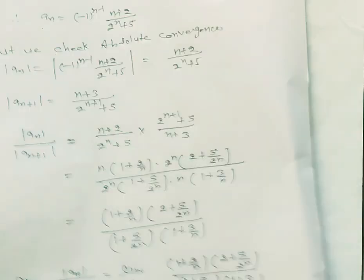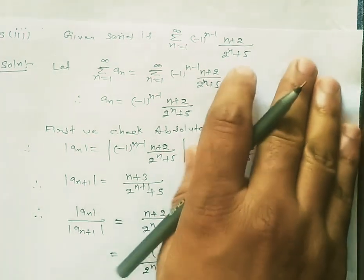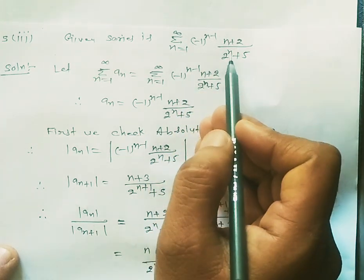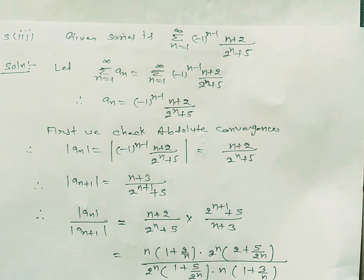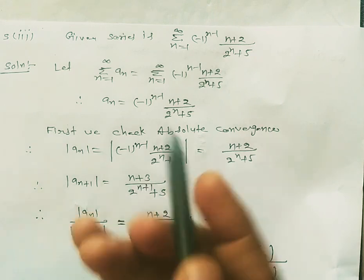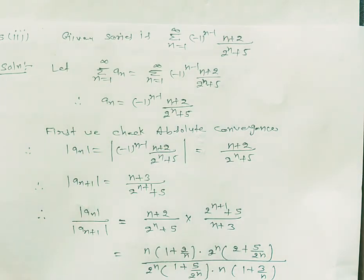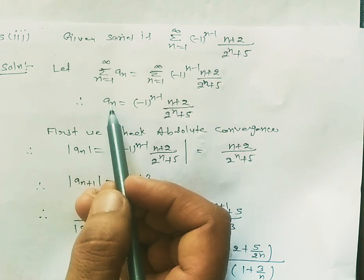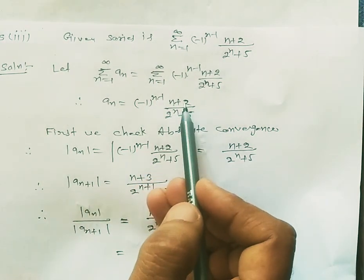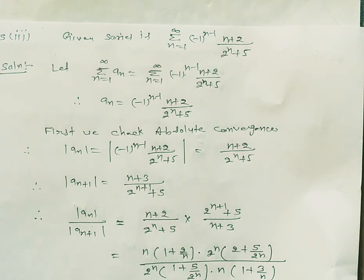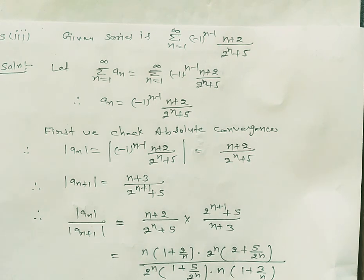Now we discuss Question 5, Part 3. The given series is summation n=1 to infinity of (-1)^(n-1) * (n+2) / 2^(n+5). We let a_n = (-1)^(n-1) * (n+2)/2^(n+5). We first check absolute convergence. Taking |a_n| = (n+2)/2^(n+5), and |a_(n+1)| = (n+3)/2^(n+6). If absolute convergence holds, the series is automatically convergent; otherwise we check by Leibniz test.